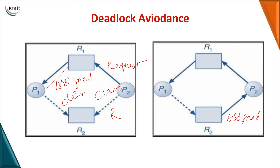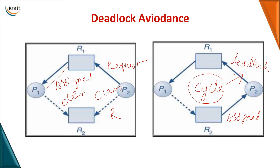When you convert a claim edge to a request and finally to an assignment, you check whether there are any cycles in the graph. If you see a cycle — for example P1 to R2, R2 to P2, and P2 to R1 — this leads to a cycle. If converting a claim to an assignment edge creates a cycle in a resource allocation graph, it compulsorily leads to a deadlock. So for single instance, a cycle in the resource allocation graph always leads to a deadlock.